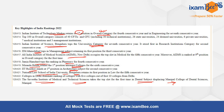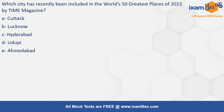Next question: Which city has recently been included in the World's 50 Greatest Places of 2022 by Time Magazine? Time Magazine releases a list of 50 greatest places, and recently one Indian city has been included. Pause the video and try to answer. The answer here is Ahmedabad — Ahmedabad has been included in the World's 50 Greatest Places by Time Magazine.